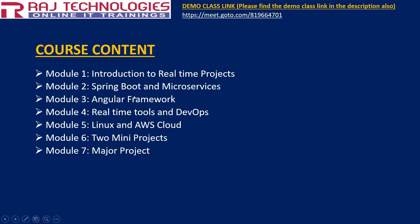In Module 2, we go with Spring Boot and Microservices. Module 3 covers the Angular Framework — the main use of Angular is UI and front-end design, while the back-end is developed with Spring Boot and Microservices. Module 4 covers very important real time tools, DevOps tools, Linux, and AWS Cloud.